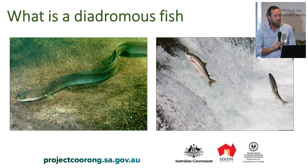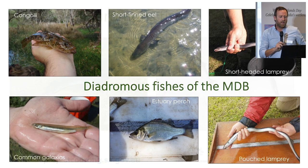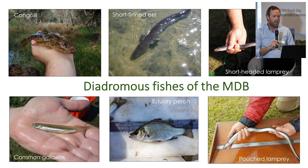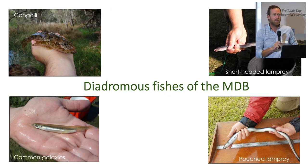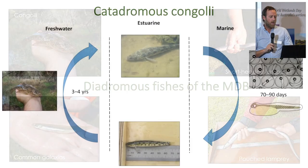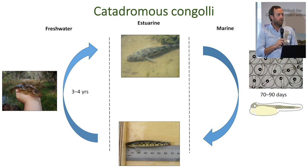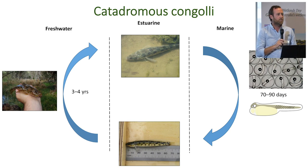What is a diadromous fish? Quite simply, they're those species that require movement between marine and freshwater environments to complete their life cycle, and some of these fish undertake some of the most impressive migrations in the animal kingdom. In the Murray-Darling Basin there are six species of diadromous fish native to the basin; four have been a focus of our research - congoli, common galaxias, short-headed lamprey, and pouched lamprey. The congoli is considered a catadromous fish: adults are freshwater residents, they migrate downstream to the marine environment for spawning, and then juveniles undertake corresponding upstream migrations into freshwater.